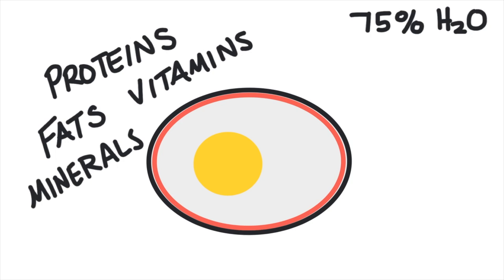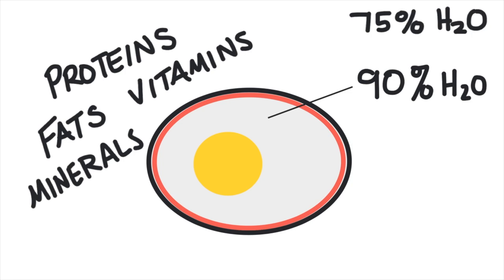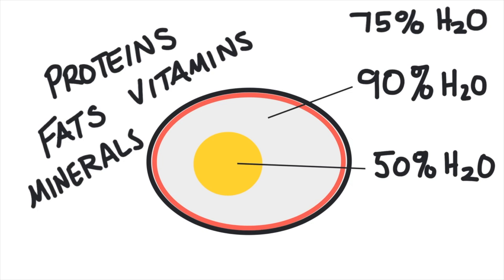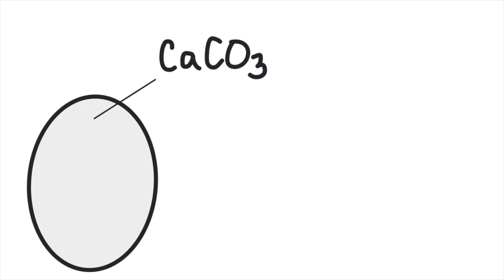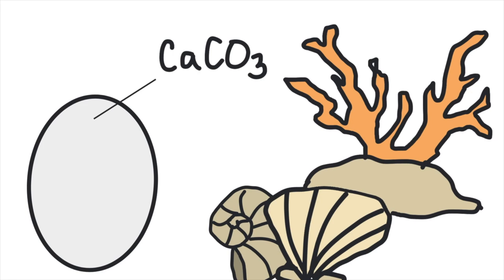However most of it is water. 75% of the egg is water, and most of that water is in the albumin, which is 90% water. The rest of the water is in the yolk, which is about 50% water. The shell is hard and rigid and made almost entirely of calcium carbonate — a mineral that makes up seashells and coral reefs.